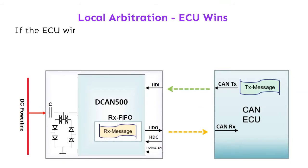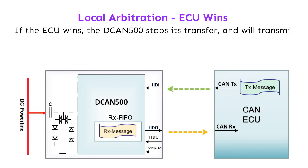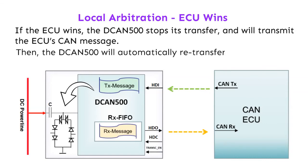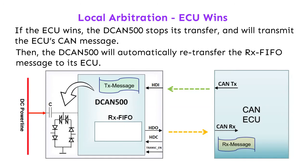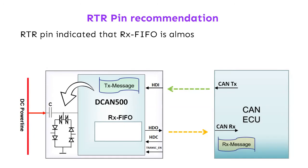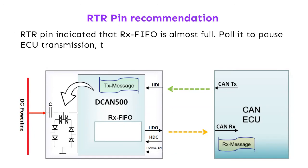If the ECU wins, the DCAN 500 stops its transfer and will transmit the ECU's CAN message. Then, the DCAN 500 will automatically re-transfer the RX FIFO message to its ECU. The RTR pin indicates that the RX FIFO is almost full — poll it to pause ECU transmission and empty the RX FIFO.